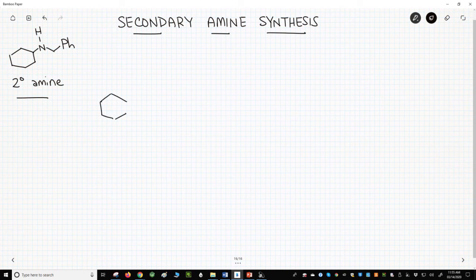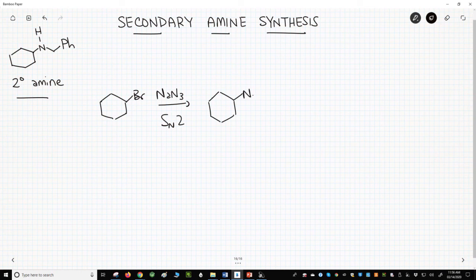So we'll react cyclohexyl bromide with sodium azide in an SN2 reaction to make the azide. We've now made one of our C-N bonds, but we need to reduce the azide to get our primary amine.